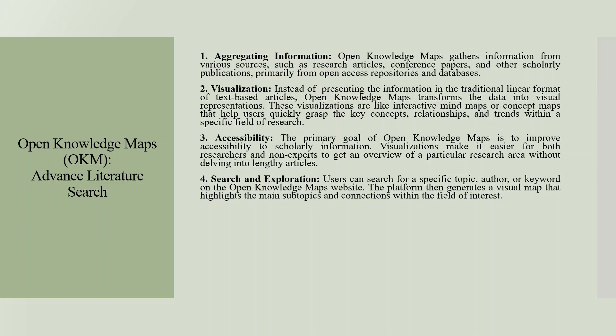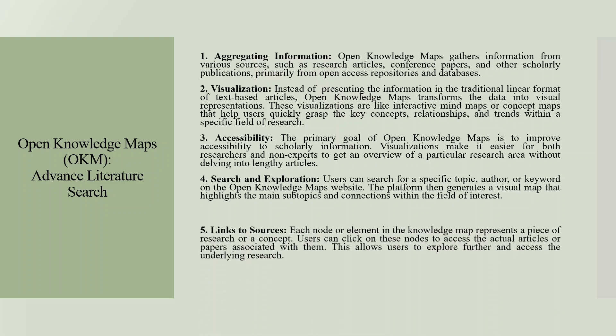Users can search for a specific topic, author or keyword on the open knowledge maps website. The platform then generates a visual map that highlights the main subtopics and connections within the field of interest.